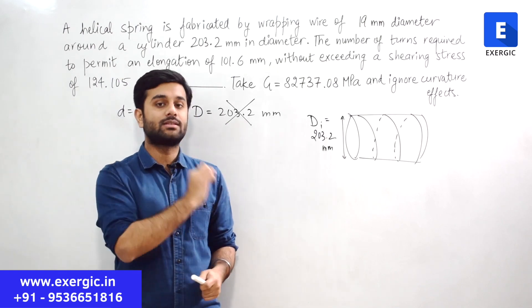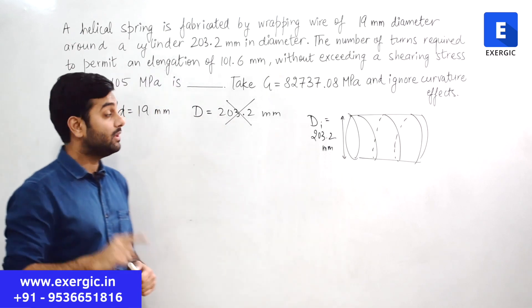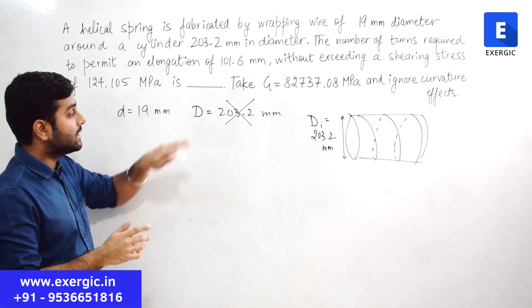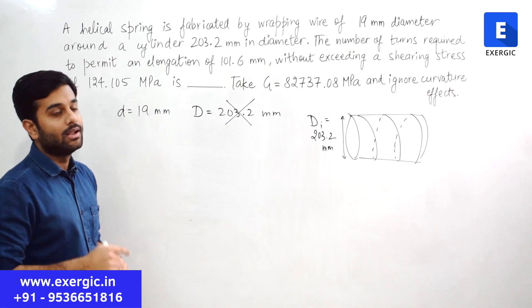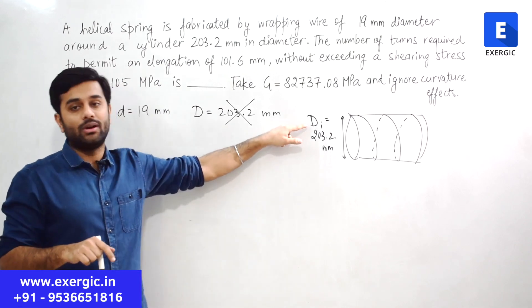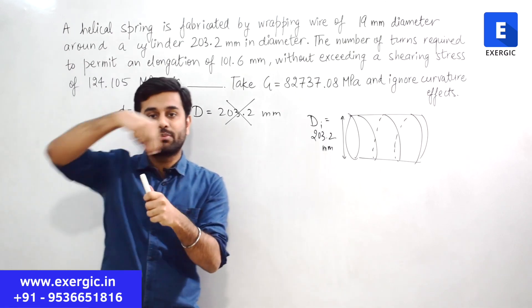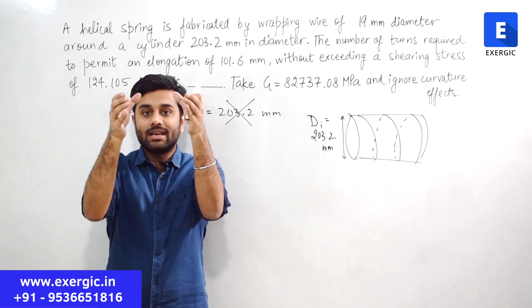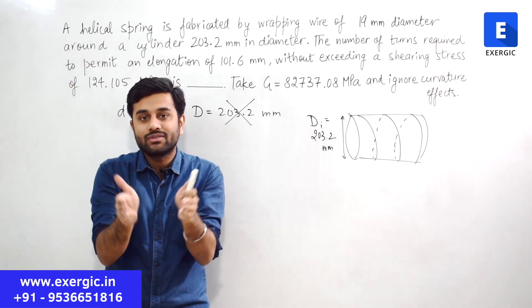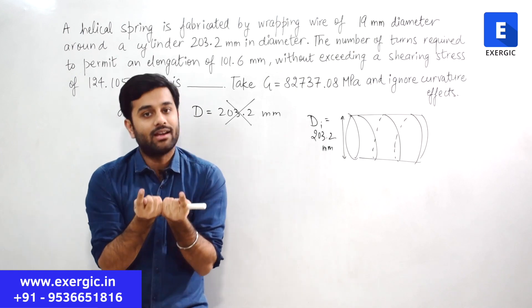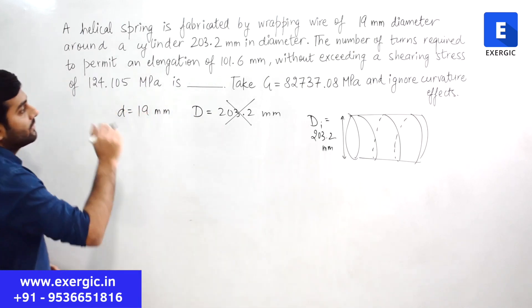Many of you will do this mistake in the question. Be very specific about that. Question has not given you mean coil diameter. It has only given you inner coil diameter because if you wrap a spring around a cylinder, the cylinder is touching the inner part of the spring. That diameter is the inner coil diameter.